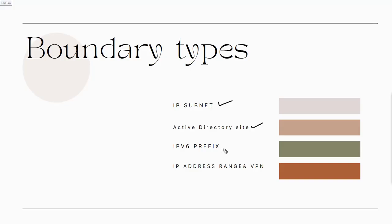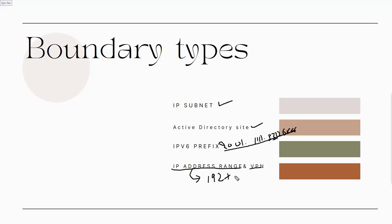There is also an IPv6 prefix boundary type, where you type the IPv6 prefix address manually. You can also assign an IP address range — for example, a range starting from 192.1.1.1 to 192.1.1.101 — or a VPN range. This allows you to define a specific range of IP addresses rather than an entire subnet, based on your requirements.